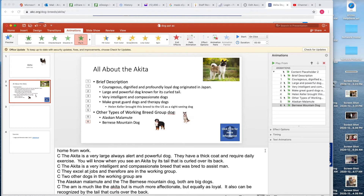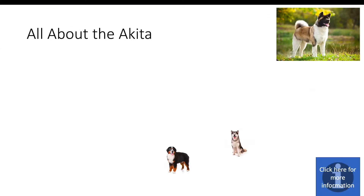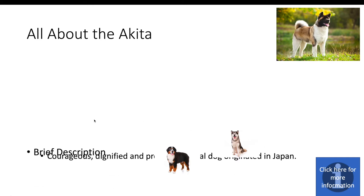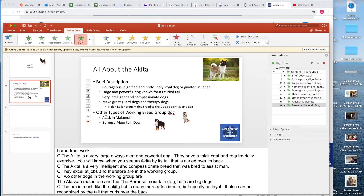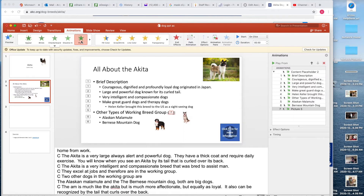The problem with this is if I go to present, notice that I'm talking about the Akita, there's a picture of the Akita, but this random picture of a Bernese Mountain Dog and a random picture of an Alaskan Malamute are just sitting on my slide — that's weird. So I am going to add animation to those dog pictures so they come in with the breed name. I recommend watching this first, then going in and doing it and coming back to refer to this if needed.